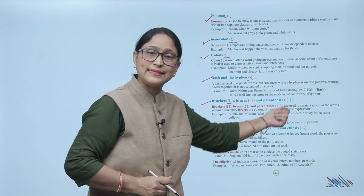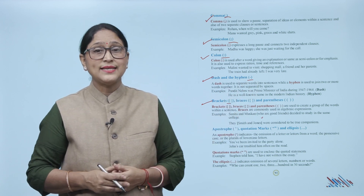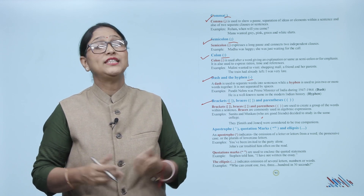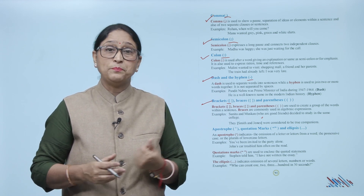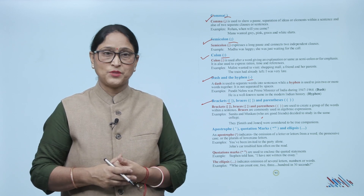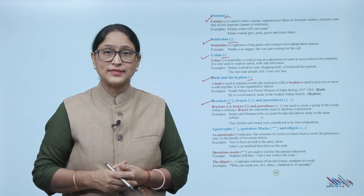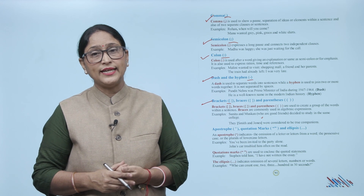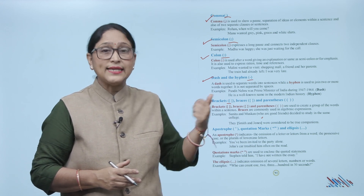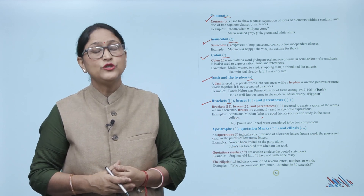Brackets and parentheses are used to create a group of words within a sentence. These are commonly used in algebraic expressions. Example: 'Sunita and Muskan, who are good friends, decided to study in the same college. They (Smith and Jones) were considered to be true companions.'